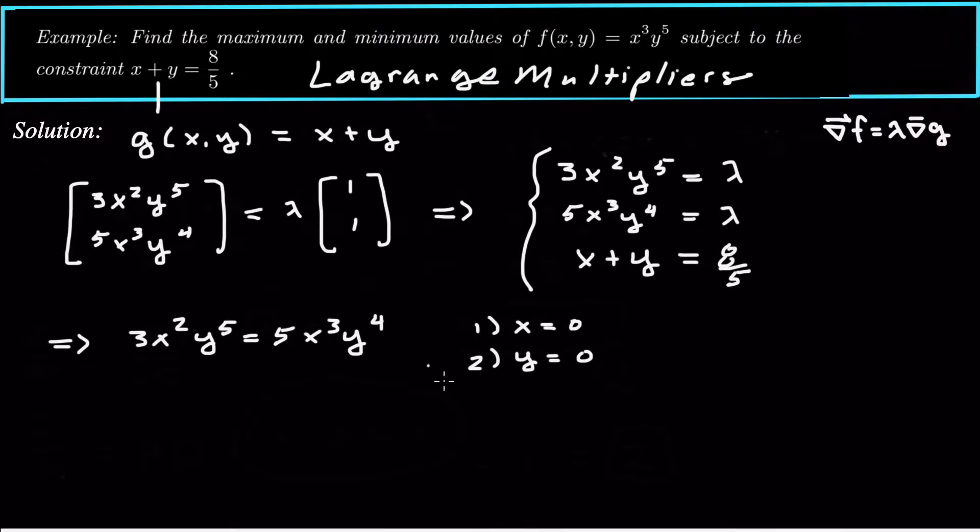So that's why we consider those two cases separately. The third case is if maybe they are non-zero, so x and y are not 0, then we can cancel out and we can say 3y would be equal to 5x by dividing both sides by x squared y to the 4th. So that would tell me that in the last case, y would equal 5 thirds x.